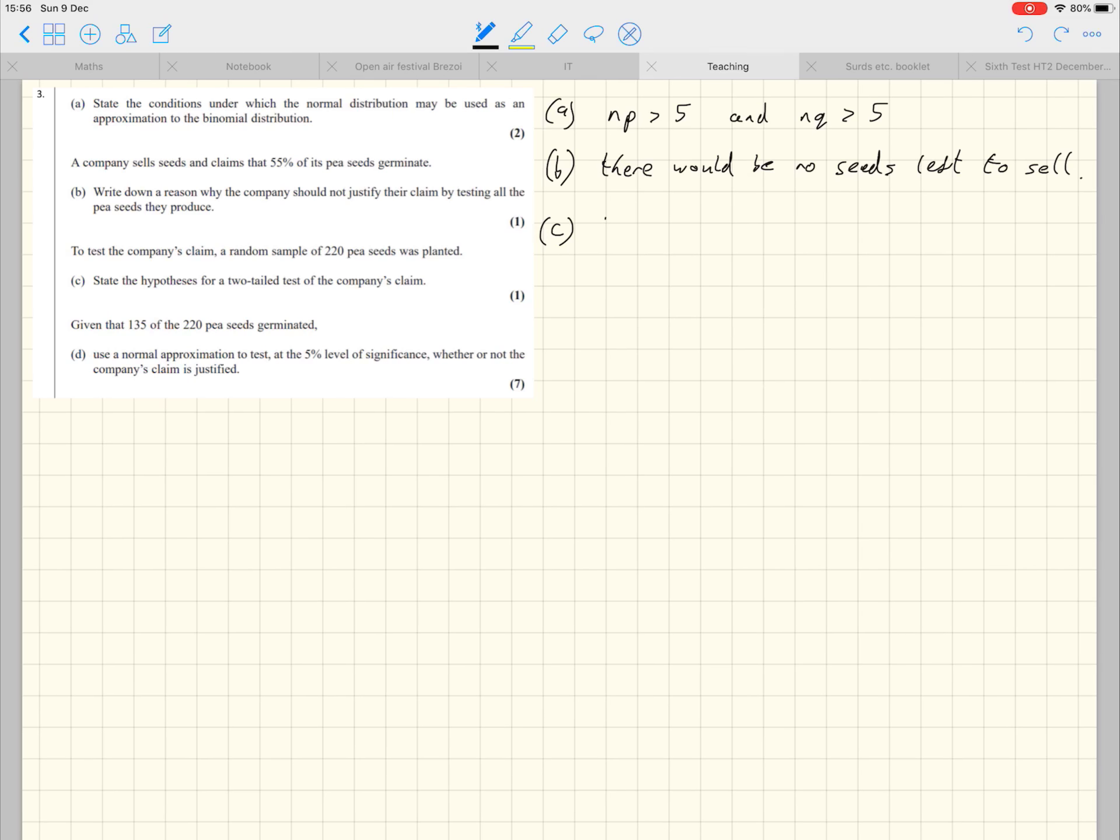So the hypotheses, H0 and H1, are to do with P, not mu. Mu is the population mean. P is the probability of success in a single trial, or the proportion that have a certain property, in this case that they'll germinate. So the null hypothesis is the proportion that germinate is 0.55. Now it specifically says two-tailed test, it's not hidden away anywhere, it says it explicitly, so P is not equal to 0.55.